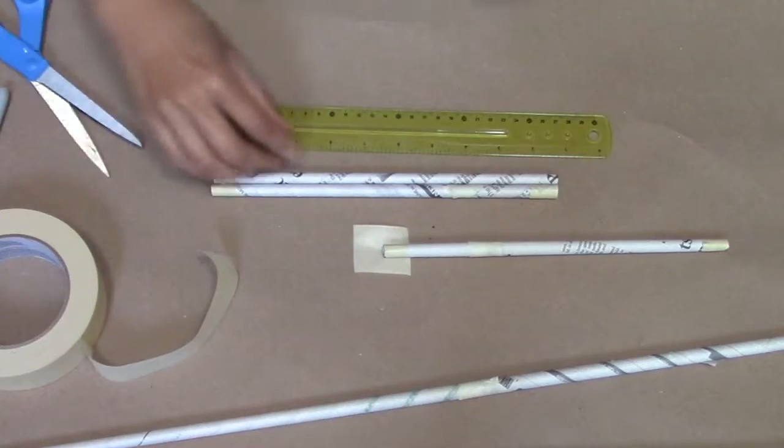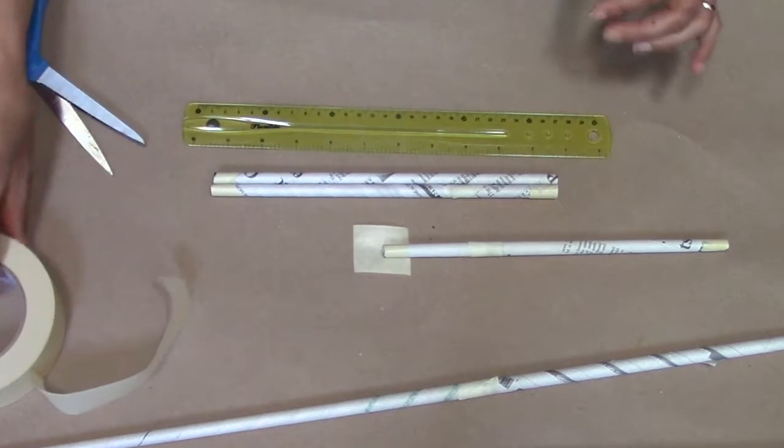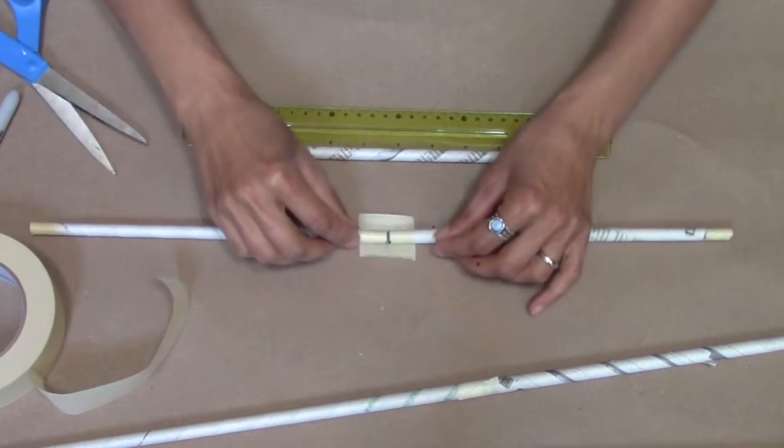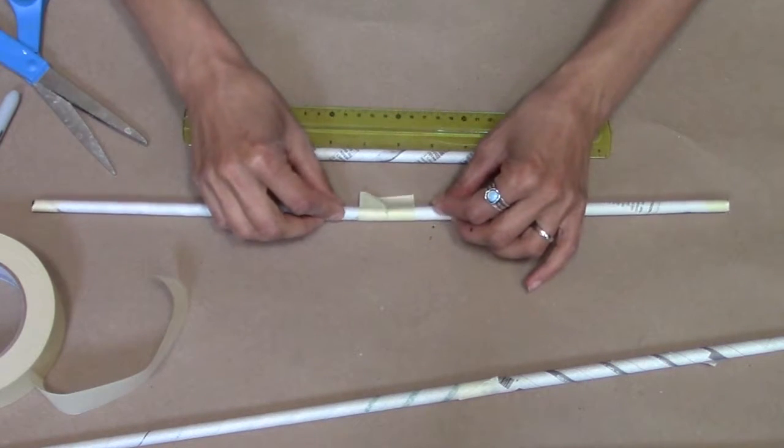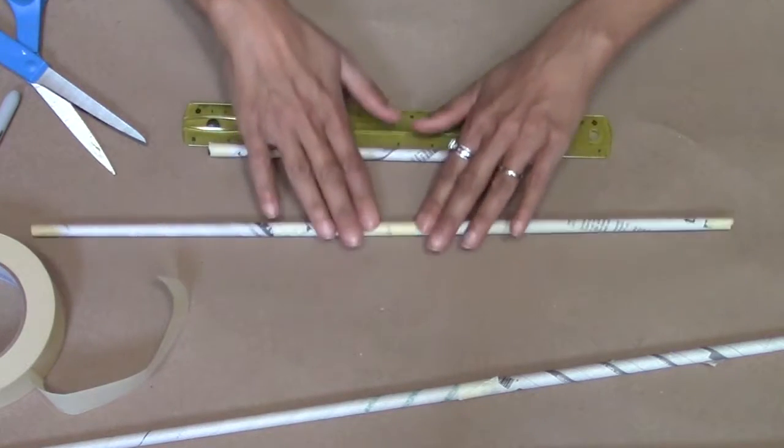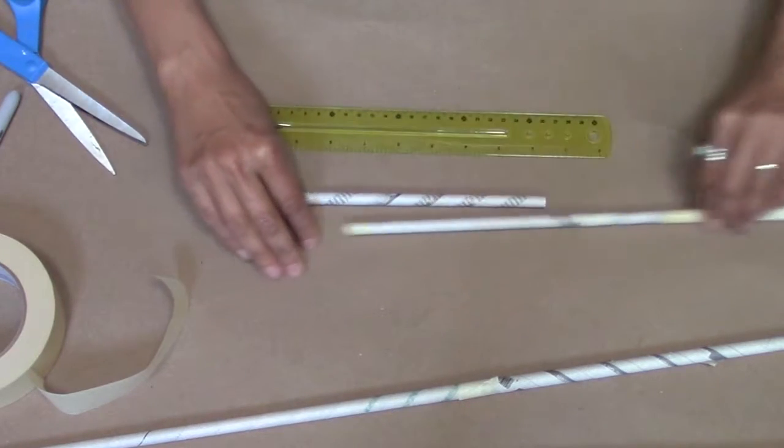Lay your cut tube halfway onto the tape and lay your joining tube on the other side. Now gently roll the two tubes to attach the tape, and then roll it all the way in the other direction until the tape runs all the way around the two tubes.